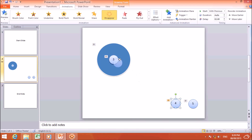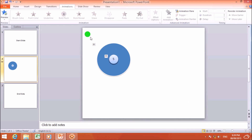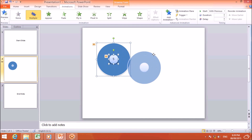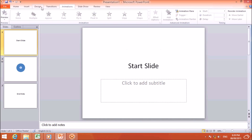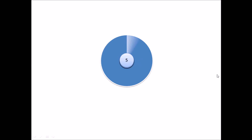Now I will bring all the numbered ovals inside the large oval — one, two, three, four, and five. Then I will select them and can move them to the center if desired.